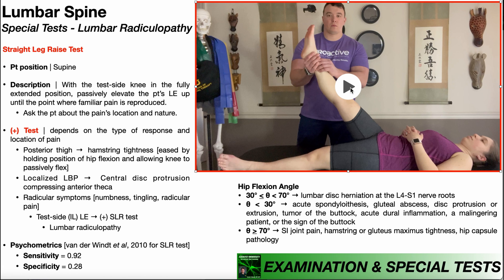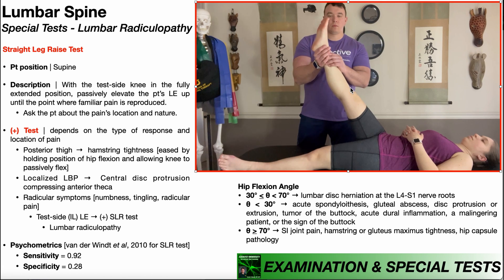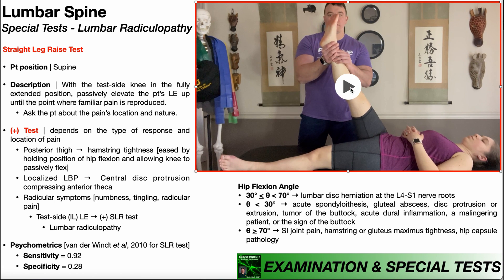Once we get beyond 70 degrees and above, we're thinking SI joint pain, hamstring or gluteus maximus tightness, or a pathology of the hip capsule. The point is, if the patient does have a lumbar radiculopathy, more than likely the pain is going to be felt in the range between 30 and 70 degrees.